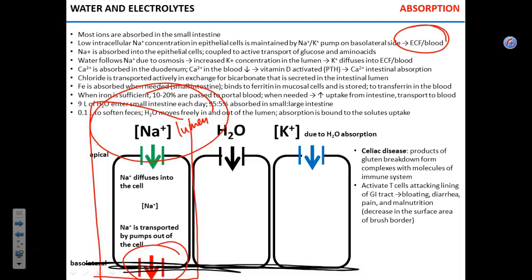The sodium concentration inside is not just low — it's lower than the concentration of sodium in the intestinal lumen, so sodium can simply diffuse from the intestinal lumen into the epithelial cell. The sodium-potassium pump maintains that low intracellular concentration. And remember the first rule: water follows sodium — that's osmosis.